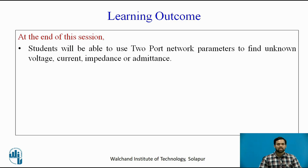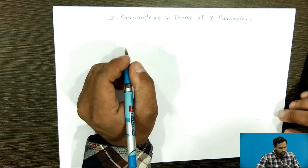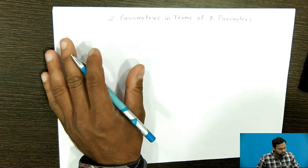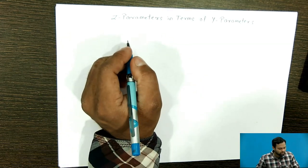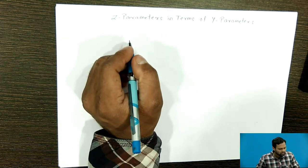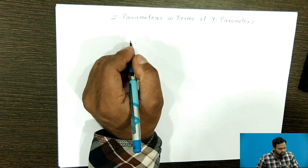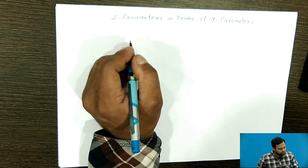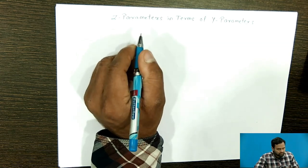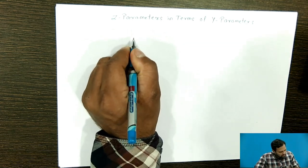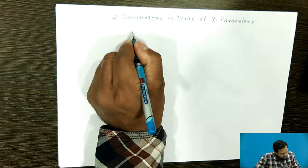Now we can write the equation for one parameter in terms of another parameter. First, we will see how the Z parameter can be written in terms of the Y parameter. So first we will write the equations for Z parameters.